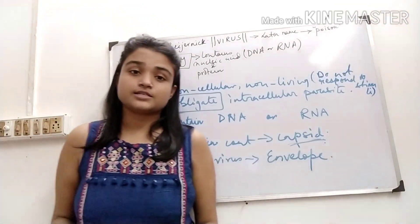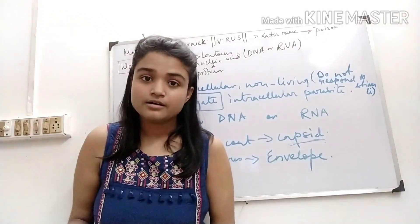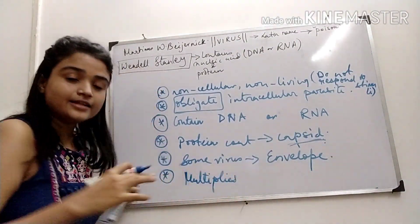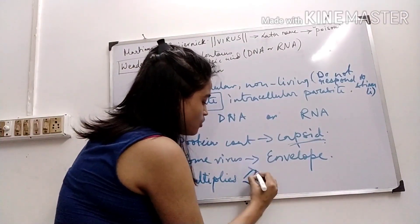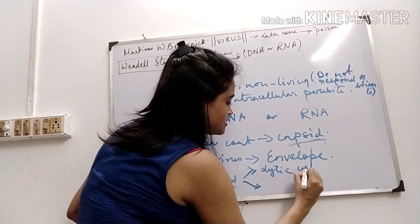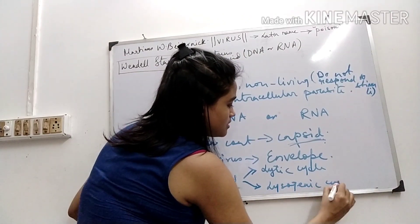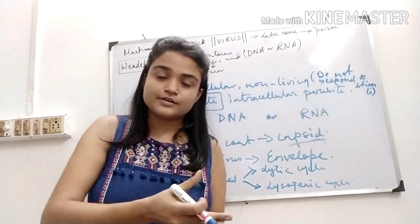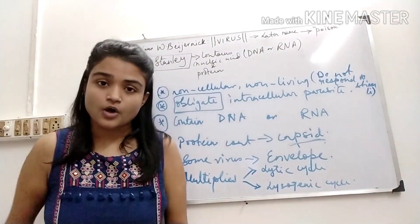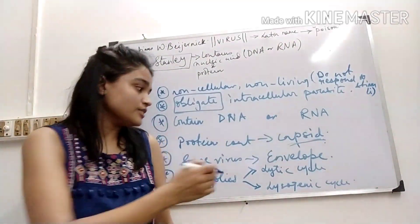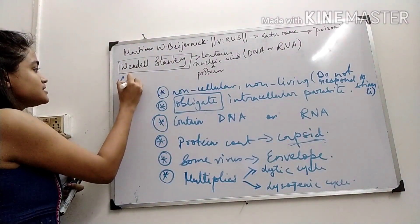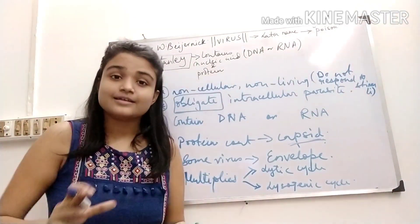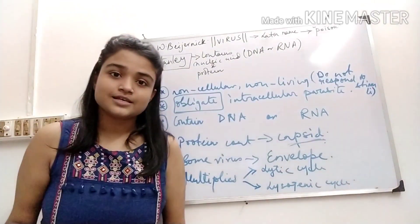So these are a few characteristics and an introduction to viruses. When the virus enters into the host cell, it multiplies inside and undergoes two cycles: the lytic cycle and the lysogenic cycle. In the lytic cycle, the virus particle multiplies inside the host and then causes lysis of the host cell, spreading the infection and releasing virion particles. A virion is a complete virus particle coated with capsid and containing nucleic acid, which causes infection.